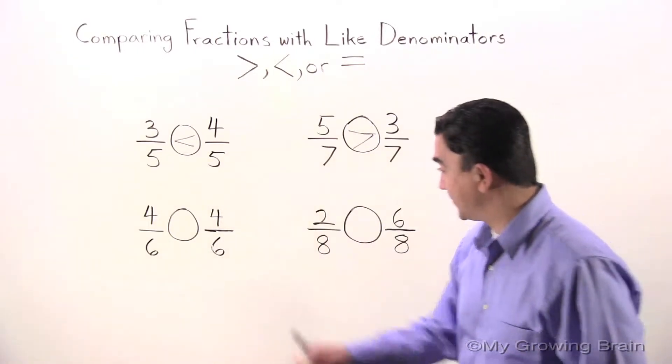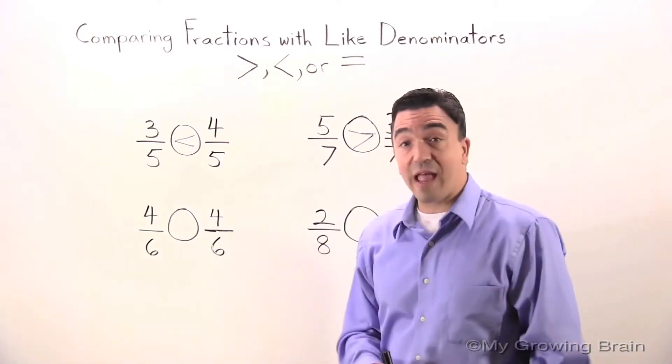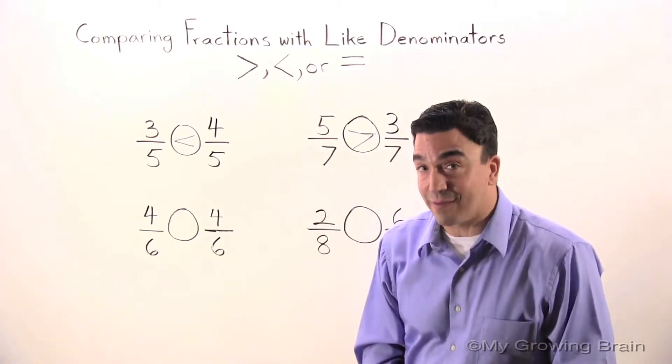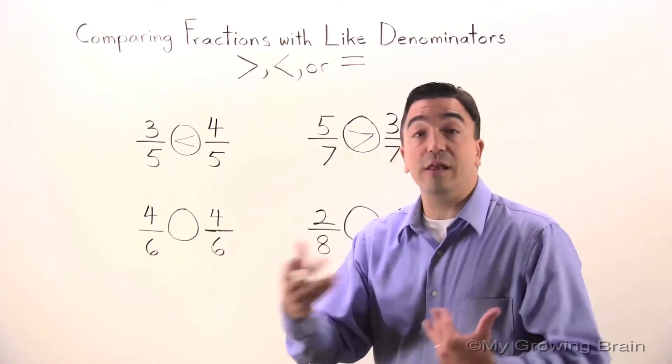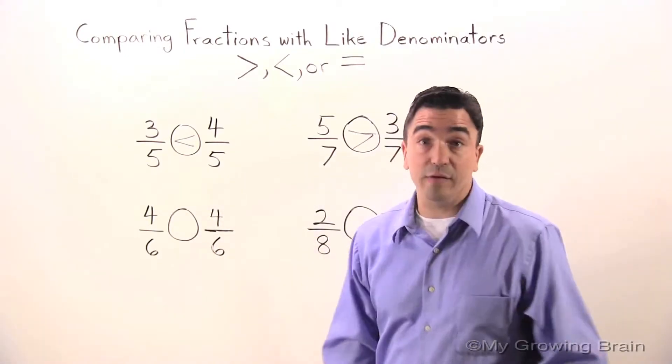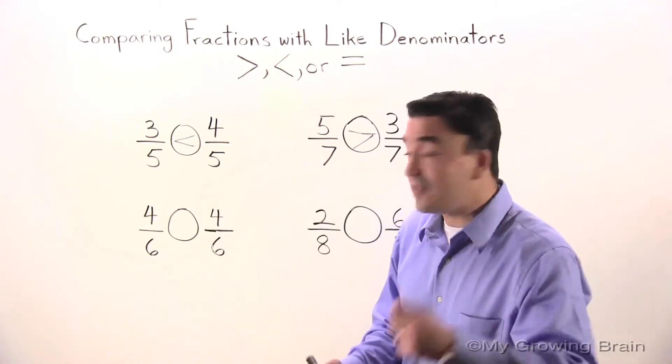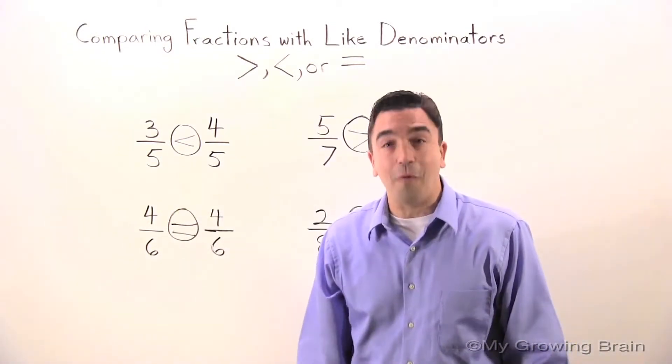Moving right along. Four-sixths - is it less than, greater than, or equal to four-sixths? Once again we're dealing with like denominators, so we look at the numerator. We have a numerator four and a numerator four. They're the same. Four-sixths is equal to four-sixths.